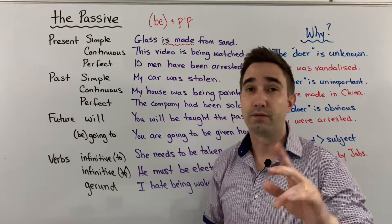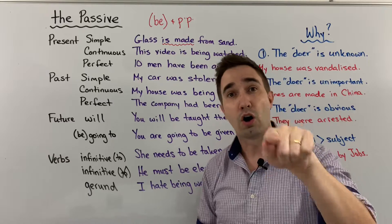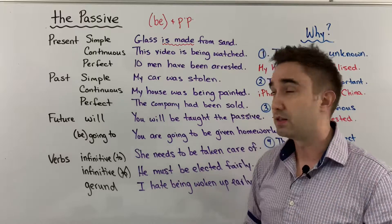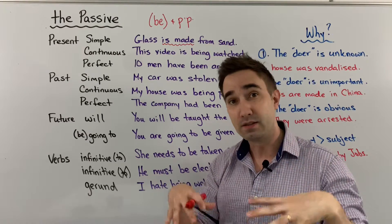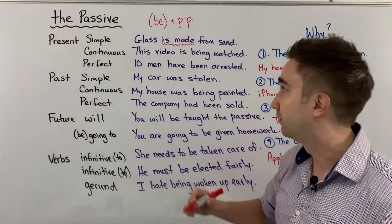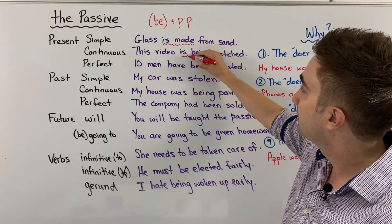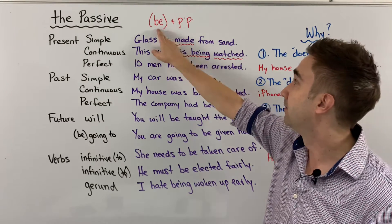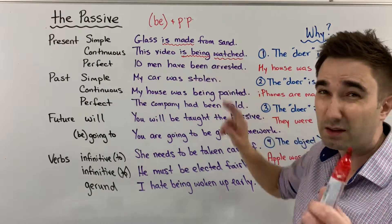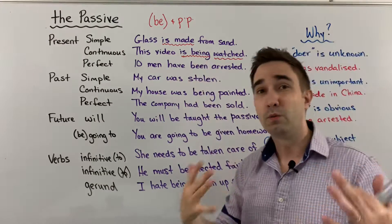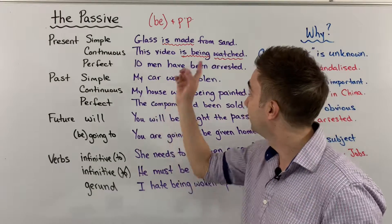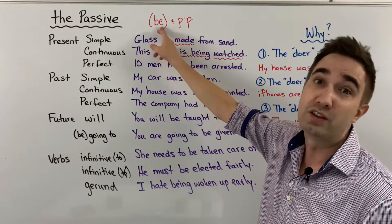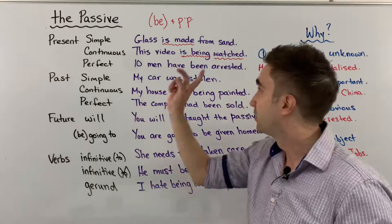For present continuous, I can say: you are watching this video. But if I want to use this in the passive and focus on this video as the subject, I can say: this video is being watched. 'Is being' — that is be. 'Is being watched.' Now, I've told you many times we can't use be with verb-ing, but surprise — actually we can, because here 'be' is acting as an auxiliary verb, not a main verb. So this is okay.